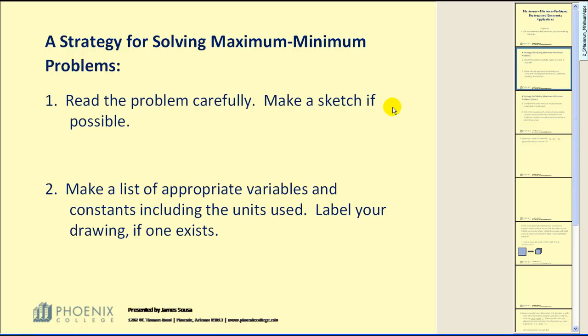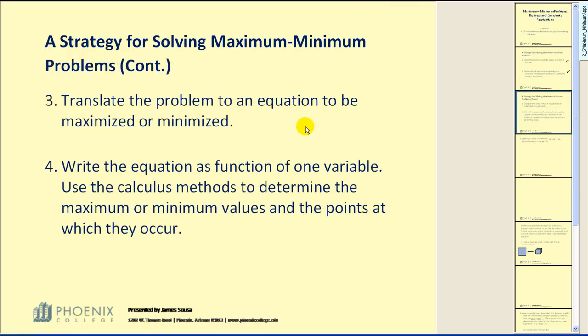Number one, read the problem carefully and if possible make a sketch. Number two, make a list of your variables and constants including your units and label your drawing if appropriate. Translate the problem into an equation that can be maximized or minimized. And lastly and most importantly we need to try to write the equation as a function of one variable. If we can do this then we can use calculus methods to determine the maximum or minimum values and the points at which they occur.